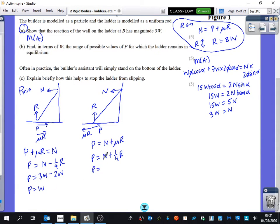And here we get that P is equal to N, which is 3W, plus a quarter of R, which is 2W. So P is equal to 5W, which means the range of values that P can be is that P has got to be in between W and 5W. And it's allowed to be equal to those ones because it would still be in equilibrium at those particular points that you've got there. Okay?